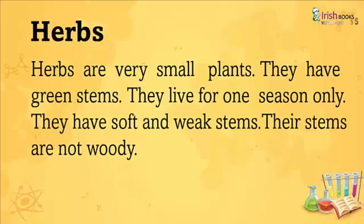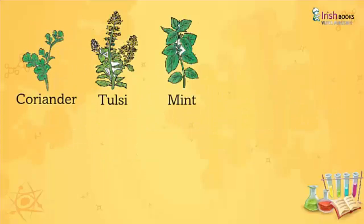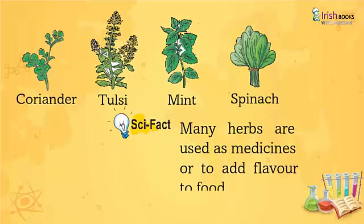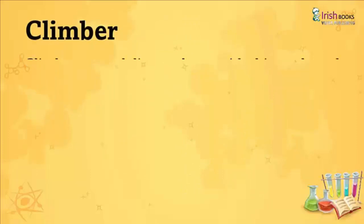Herbs: Herbs are very small plants. They have green stems and they live for one season only. They have soft and weak stems — their stems are not woody. Examples include coriander, tulsi, mint and spinach. Science fact: Many herbs are used as medicines or to add flavor to food.